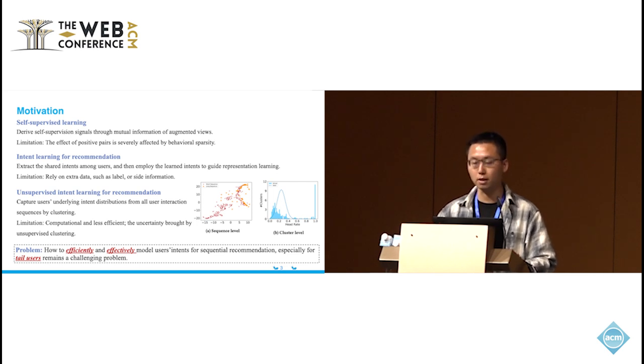To address this problem, some existing methods could be used. Firstly, some works attempt to use self-supervised learning to optimize the user representation. This method introduces additional self-supervised signals through maximizing the mutual information of augmented views. However, the effects of positive pairs from the sequential samples themselves are correlated with behavioral sparsity. Based on the observation, users usually consume items based on their latent intents. Some works try to extract the shared intents among users.